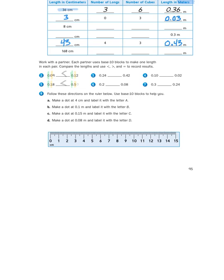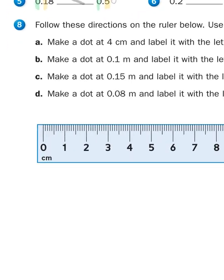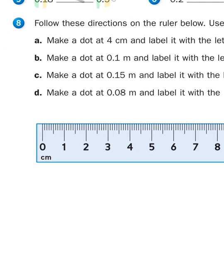For problem number 8, you have this centimeter ruler. It's not a true meter stick because it only goes to 15. It says, follow these directions on the ruler below. Use base-10 blocks to help you. It says, make a dot at 4 centimeters and label it with the letter A. So that's pretty straightforward. So here's 4. So I'm just going to put a little dot right here. And I'm going to label it A.